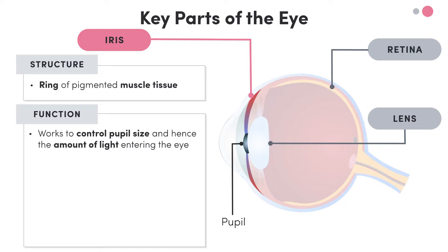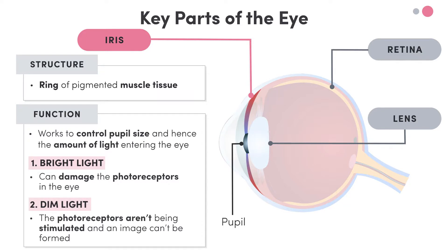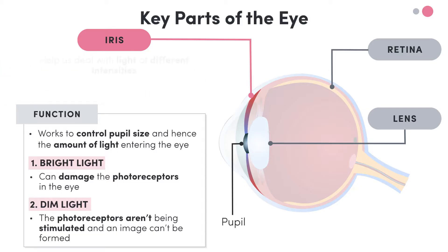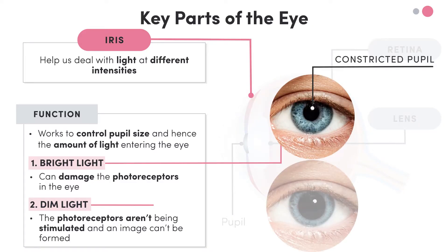This is important, because too much light can damage the photoreceptors in the eye, whilst not enough light can mean that the photoreceptors aren't being stimulated and an image can't be formed. So basically, the iris's job is to help us deal with light at different intensities. This is why you'll notice that a person's pupils in bright light are super constricted, and in dim light they are dilated.